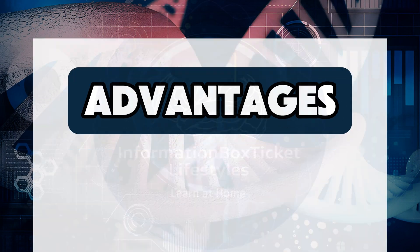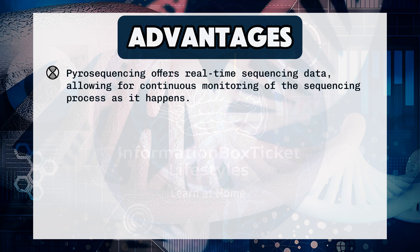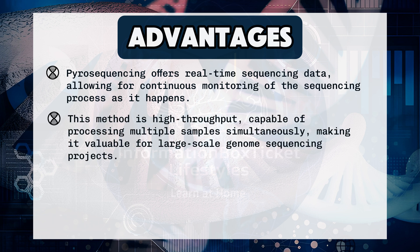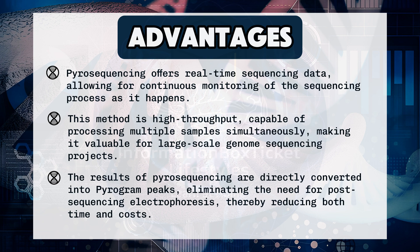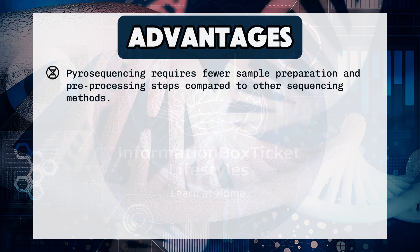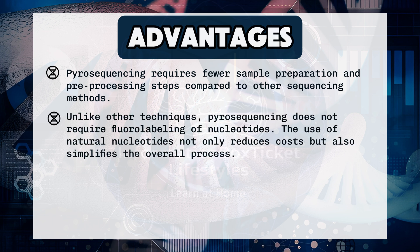Pyrosequencing offers real-time sequencing data, allowing for continuous monitoring of the sequencing process as it happens. This method is high-throughput, capable of processing multiple samples simultaneously, making it valuable for large-scale genome sequencing projects. Results are directly converted into pyrogram peaks, eliminating the need for post-sequencing electrophoresis, thereby reducing both time and costs. Pyrosequencing requires fewer sample preparation steps and does not require fluorolabeling of nucleotides, as the use of natural nucleotides reduces costs and simplifies the overall process.